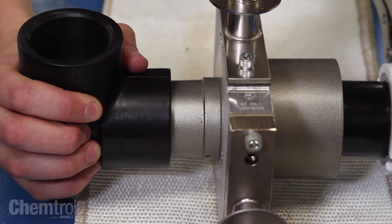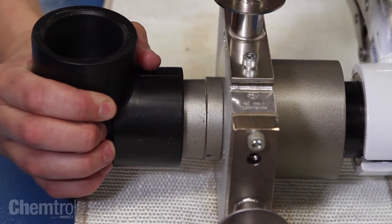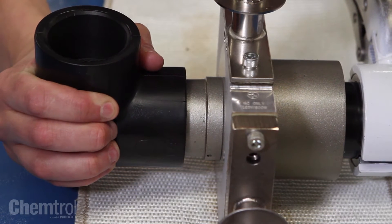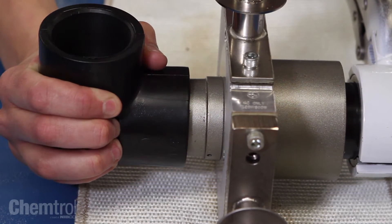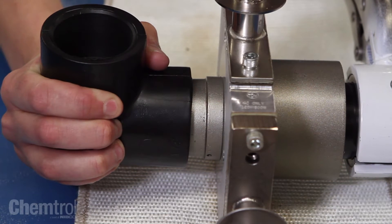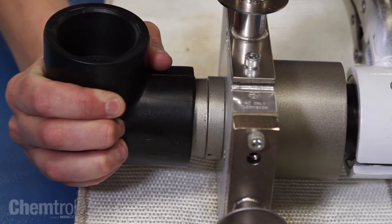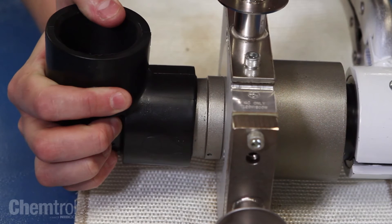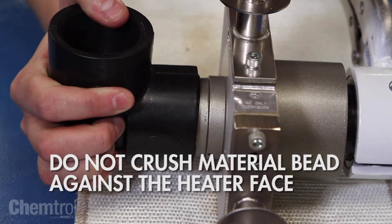Simultaneously and uniformly insert the pipe and fitting onto the heater faces. Do not force, wiggle, or twist the fitting onto the heater face. It should melt on by applying consistent pressure. Be sure not to crush the material bead against the heater face.